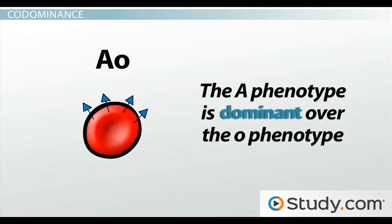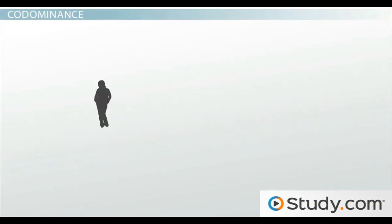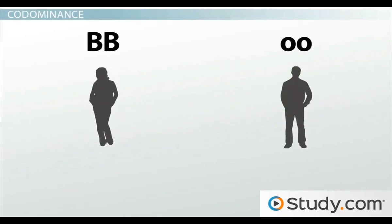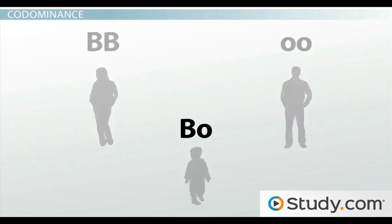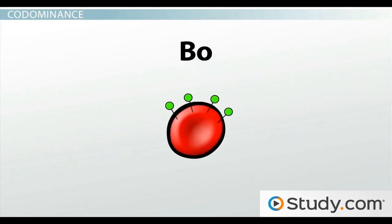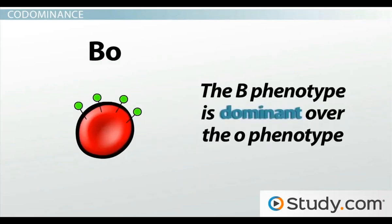If someone who has a BB genotype and someone who has an OO genotype have children, all of their children would have a BO genotype. If we look at the red blood cells from those children, we would see that the sugars expressed on the outside are all of the B type. Again, we can say that the B phenotype is dominant over the O phenotype.